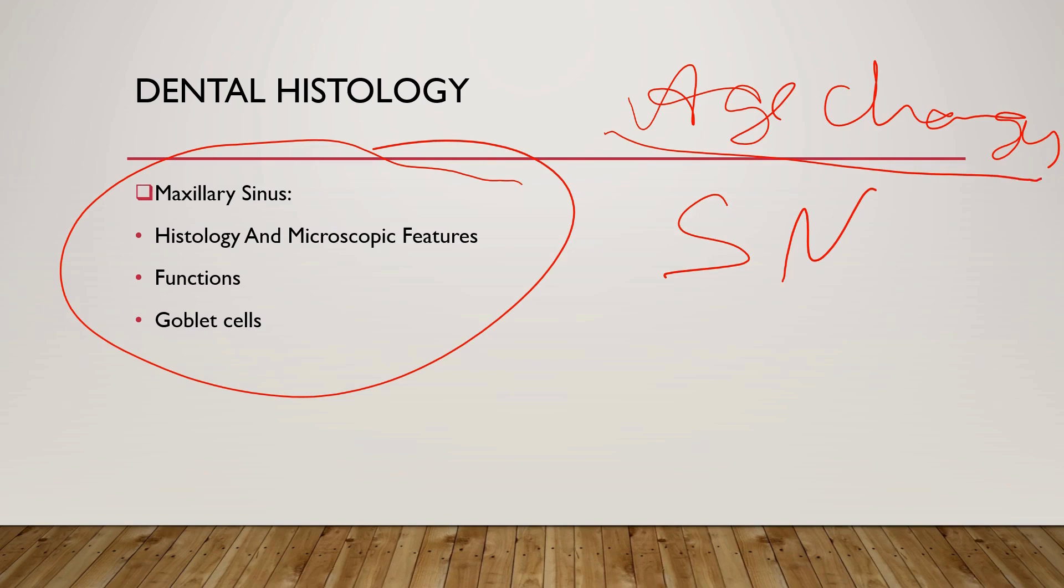Eight changes you have to study about. You have studied about enamel in the previous videos - dentine, pulp, cementum, PDL, bone, salivary glands, OMM, and all the remaining age changes are for TMJ - temporomandibular joint. You have to study about that for the age changes. For the maxillary sinus, histology is very important.